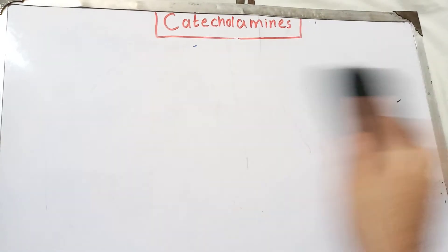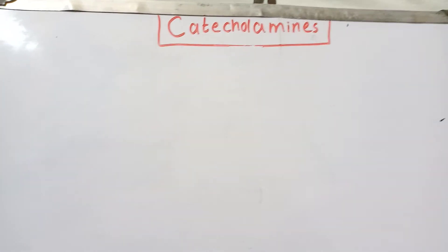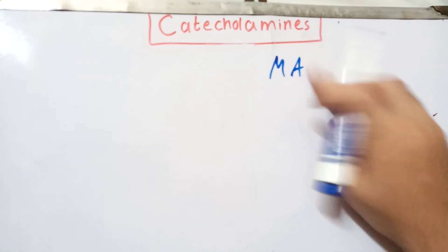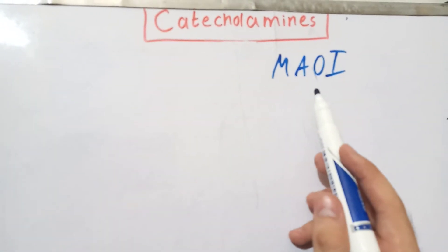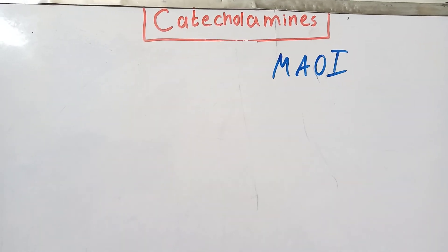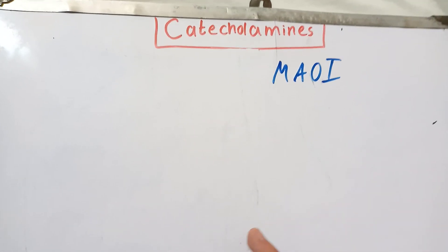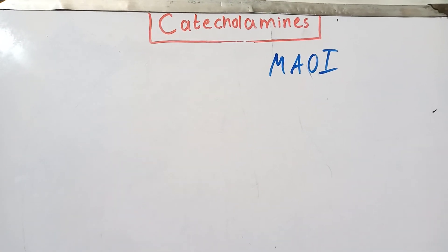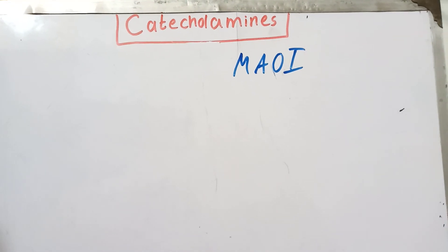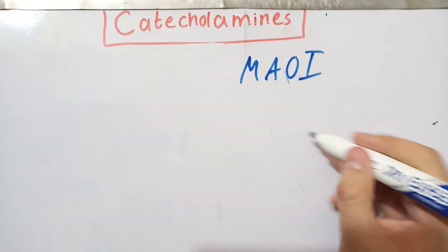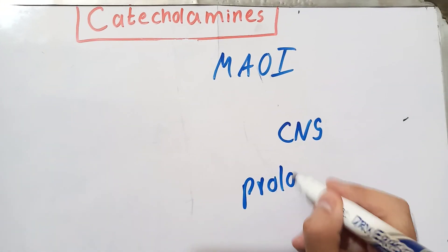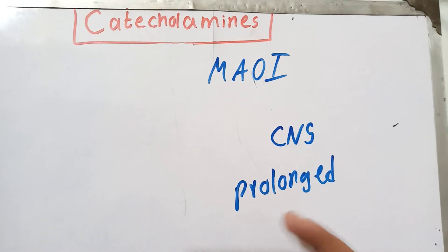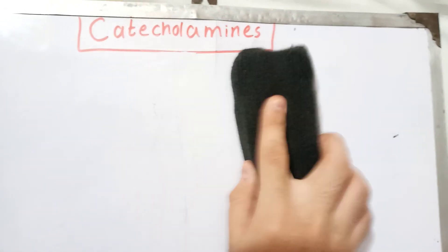Now let's talk about the clinical applications of these pathways. There is a group of drugs called monoamine oxidase inhibitors. These drugs stop the degradation of the catecholamines. If catecholamines are not being degraded, they start accumulating in the CNS where they are produced, leading to prolonged action of these catecholamines. This is used in diseases where catecholamines are rapidly degraded and prolonged action is required.